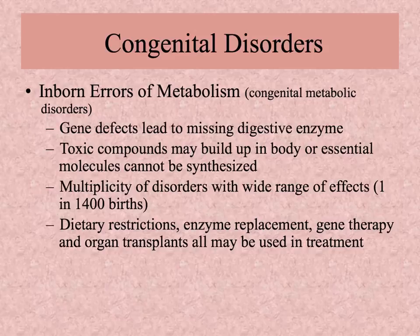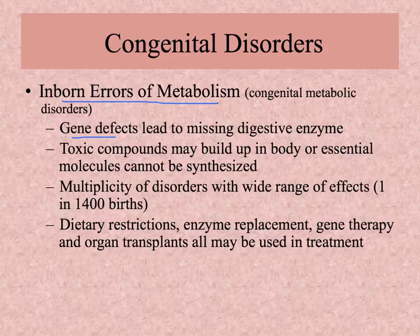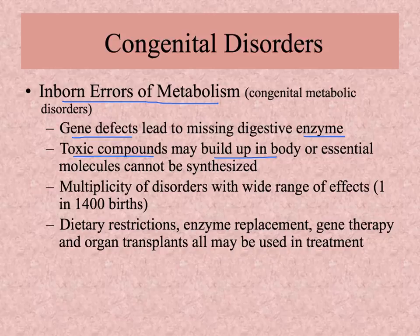Now I want to move on to congenital disorders. The first category I want to talk about is inborn errors of metabolism, also called congenital metabolic disorders. In this case, you have a faulty gene — a gene defect leads to a missing enzyme, because genes code for proteins and enzymes are proteins. As a result, toxic compounds that would be broken down by that enzyme may build up, or an enzyme that would make an essential molecule is missing so that essential molecule cannot be made.